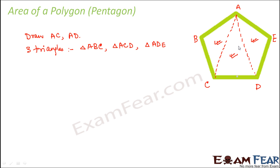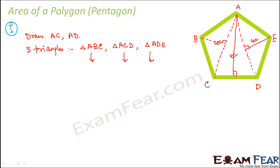In order to find out the area of these triangles, you would need the measurements of diagonals AC and AD, because the area of each triangle would be half into base into height. The base would be the diagonal and the height would be the perpendicular drawn on the diagonal. So you basically need the measurement of the diagonals and the perpendiculars on the diagonals. If you have them all, you can find out the area of the pentagon. This was option number one — divide the pentagon into three triangles, find their areas and add them up.